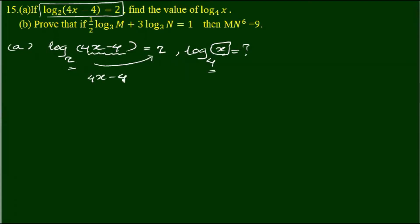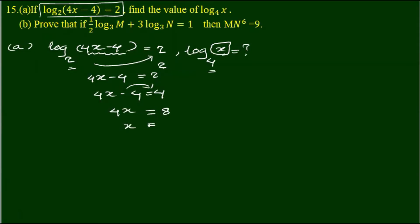2x minus 4 is equal to 2 squared. And 4x minus 4 is equal to 2. So minus 4 is equal to plus 4. So 4x is equal to minus 4 plus 4, which is equal to 2. So x is equal to minus 4.